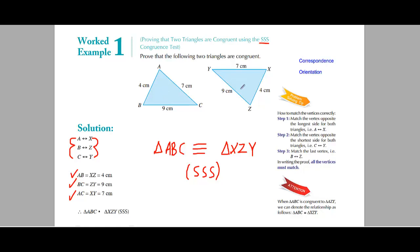Now that we have proved with the help of three sides that the two triangles are congruent, it is understood that the angles of both triangles will also be equal. The corresponding angles will automatically be equal. We have no need to prove that separately — once congruence is proved with the help of a test, the rest of the elements will automatically be congruent.